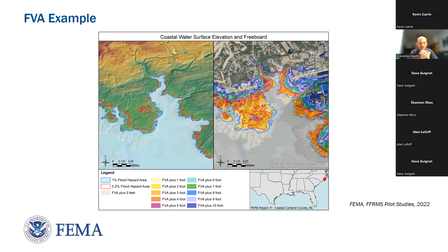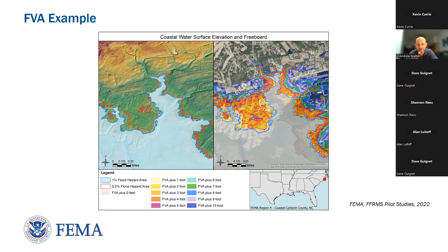Here's a little taste of what this might look like. The graphic on the left shows the floodplains we all know and love — the 1% in light blue and the red line indicating the 0.2% flood elevation and its inland inundation. The graphic on the right shows plus one through plus ten — a GIS graphic indicating the amount of additional inundation that might occur given these scenarios, and it's pretty significant.